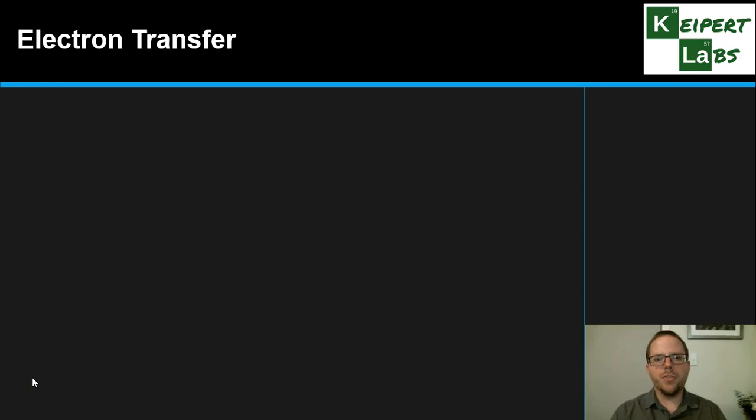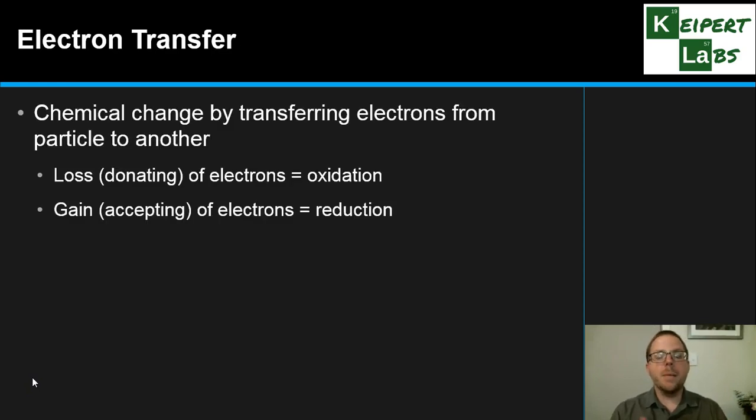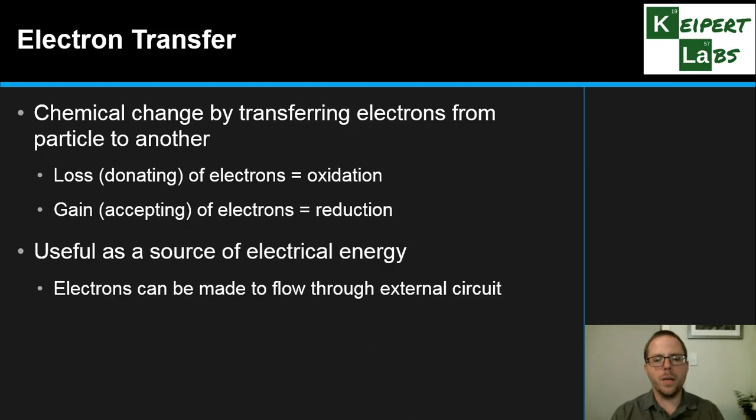So thinking about electron transfer, we're thinking about a chemical change or a chemical reaction that's happening by the process of transferring electrons from one particle to another - one atom or one ion to another. There are two processes happening simultaneously here: one substance is losing electrons or donating electrons, and that process is called oxidation. The opposite process is where electrons are being gained or accepted, and we call that reduction. So oxidation and reduction are the two complementary processes at work in this kind of process.